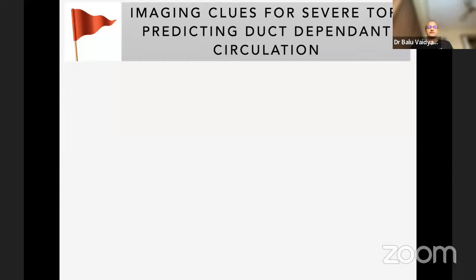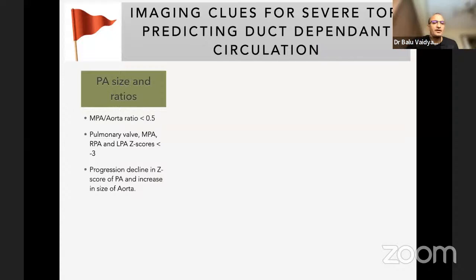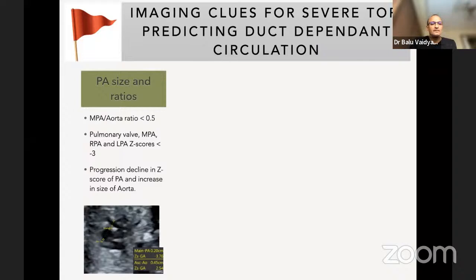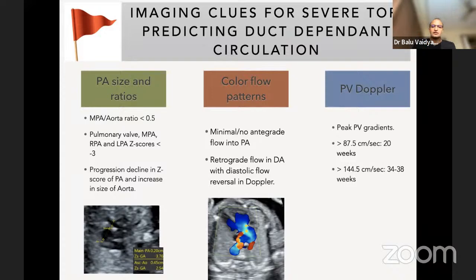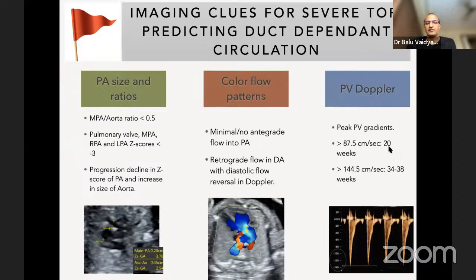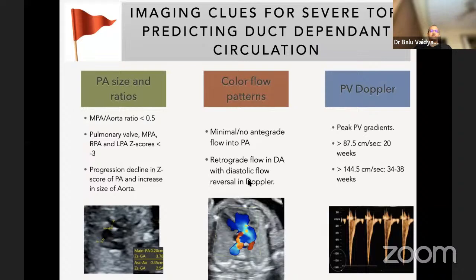What are the features that could predict the critical forms? Generally, the smaller the PA, the more severe the stenosis, especially if the PAs are becoming smaller with gestational age. Second is the color flow pattern — if you have no antegrade flow but predominantly retrograde flow into the pulmonary artery, that clearly tells you it is a very critical circulation. Third is the pulmonary valve Doppler. One study showed that a peak pulmonary valve gradient more than 0.9 at 20 weeks or more than 150 cm/s at 34 weeks would indicate severe stenosis requiring intervention. I would rely more on PA size and direction of flow in the ductus, particularly ductal flow patterns.